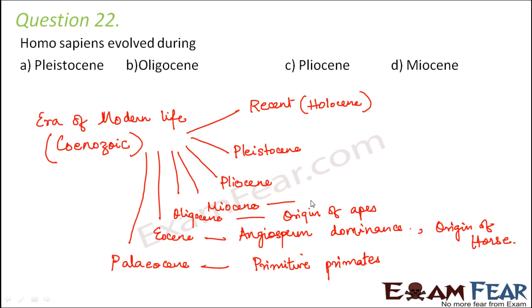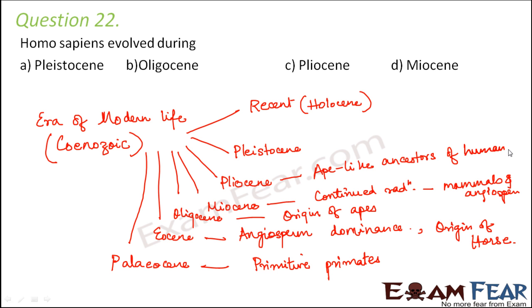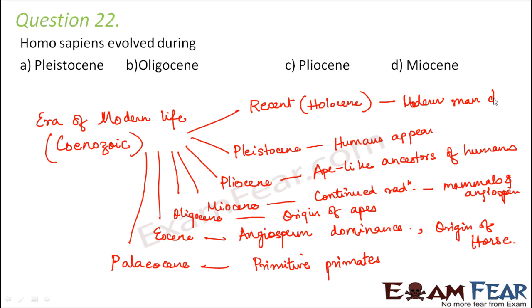During Miocene there was continued radiation of mammals and angiosperms. In Pliocene, ape-like ancestors of humans were seen. Pleistocene was the period during which humans appeared, and in the Holocene — the recent period — modern man is the dominant one.